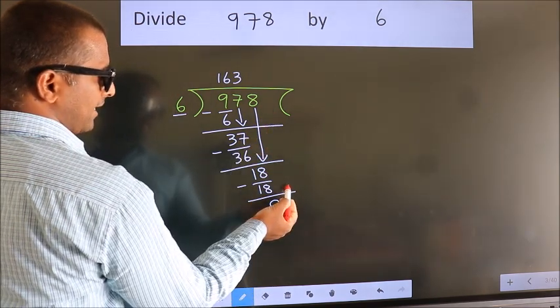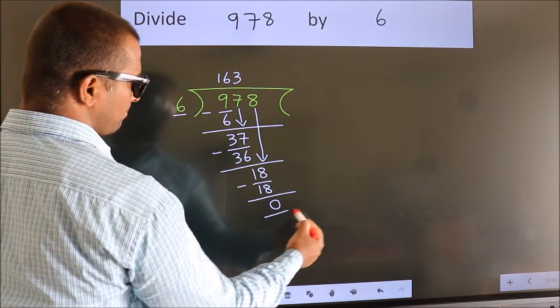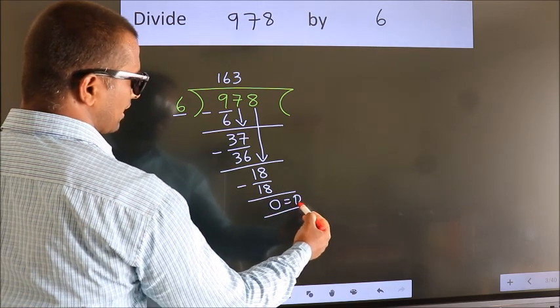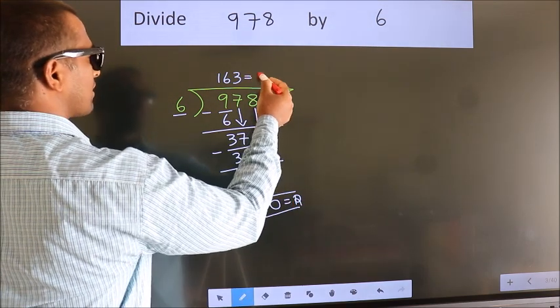No more numbers to bring down. So we stop here. This is our remainder. This is our quotient.